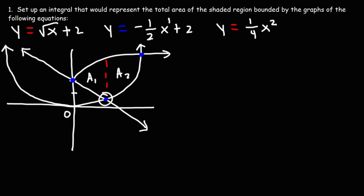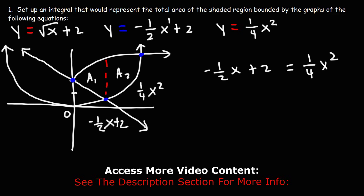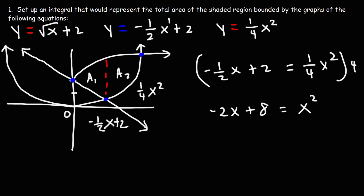At this point of intersection, we have the line y equals negative one-half x plus two, and the curve underneath it, one-fourth x squared. To find the point of intersection, we set these two equations equal to each other, since they share the same y value there. So we have: negative one-half x plus two equals one-fourth x squared. To get rid of the fractions, multiply everything by four: negative two x plus eight equals x squared.